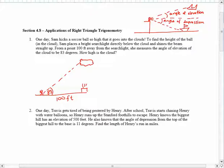And so because the searchlight is directly below the cloud, we have your right triangle. And if we're looking for the height of the cloud, we can call this y.